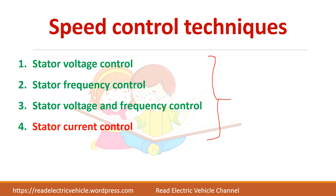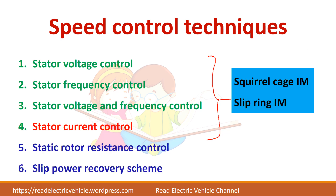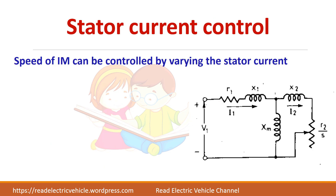All these four methods are suitable for both squirrel cage induction motor as well as slip ring induction motor. In addition, we have two more techniques which are applicable only for slip ring induction motor. In stator current control, we are changing the stator current and we are able to control the speed of the induction motor.